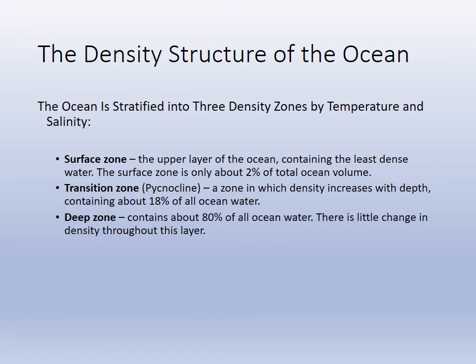The deep zone consists of about 80% of the volume of the ocean, with little change throughout that layer for temperature and density. It's fairly rich in oxygen because it generally originates in the surface areas in the Arctic and Antarctic where it sinks. There's not a lot of life using the oxygen up, so these are fairly oxygenated waters. They are also fairly high in nutrients because nutrients dissolve better in cold water. That's why our deep zone is fairly nutrient rich, and that's why upwelling is productive.